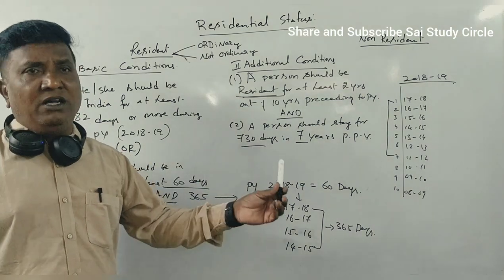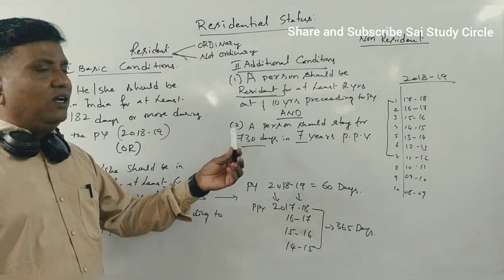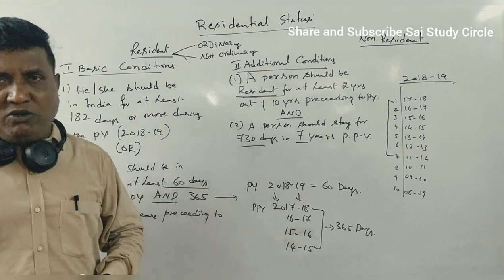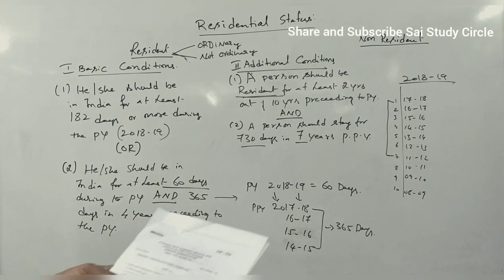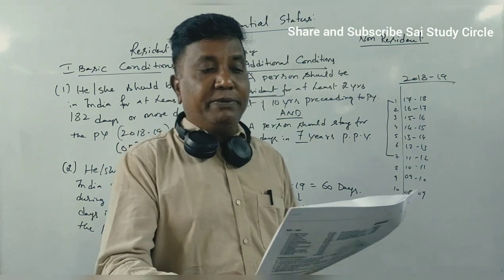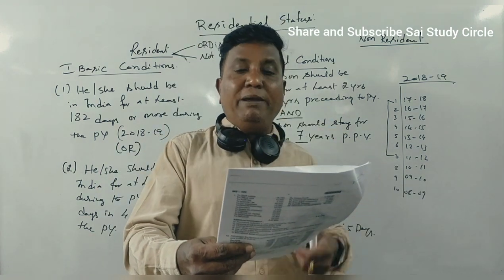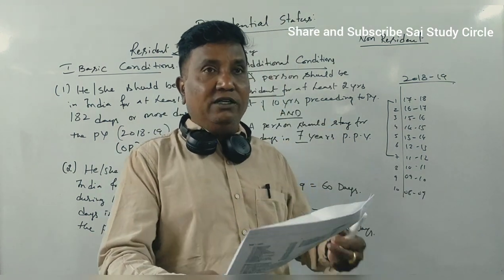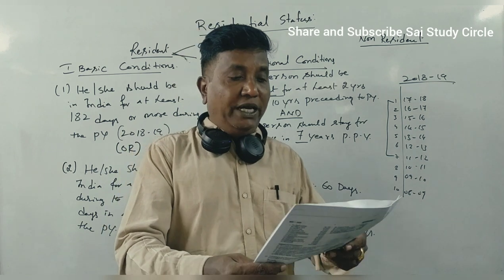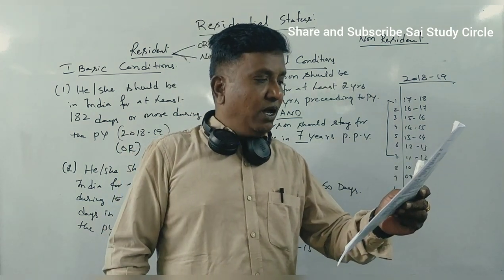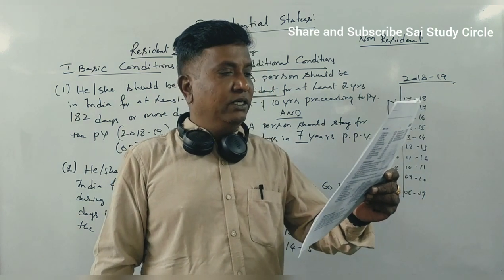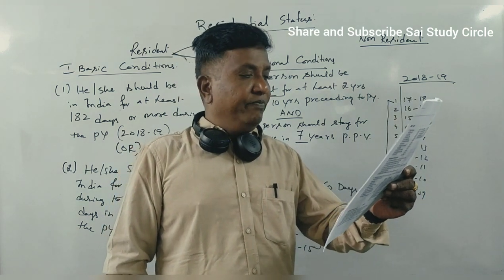We will solve one question from the question paper so that you understand clearly. For BBA students, in the 2018 June examination, they asked one question for 6 marks. Let us discuss that now.